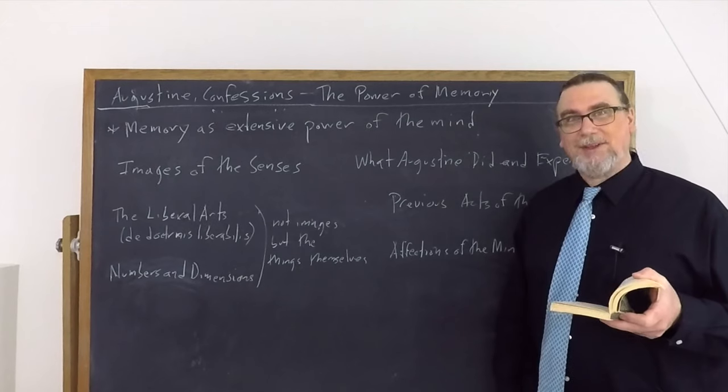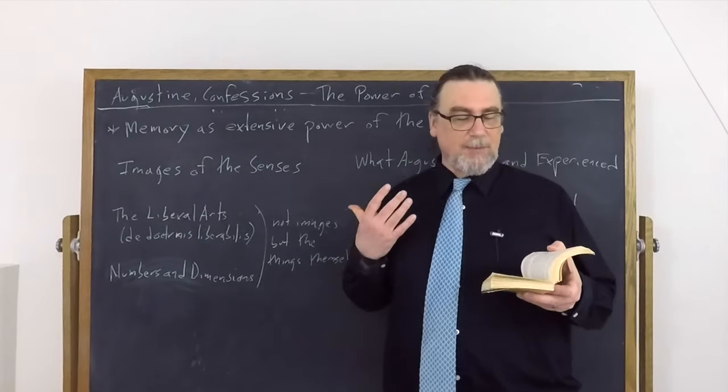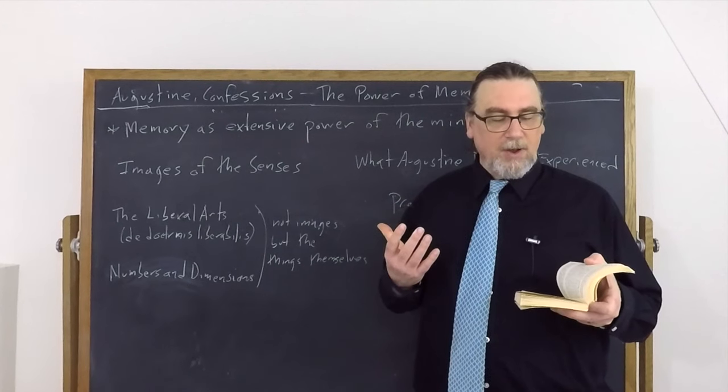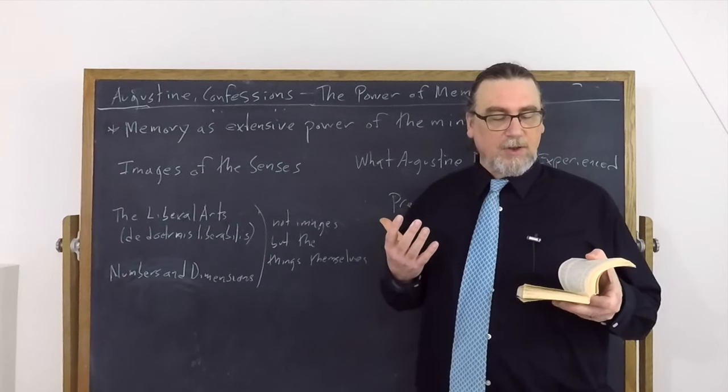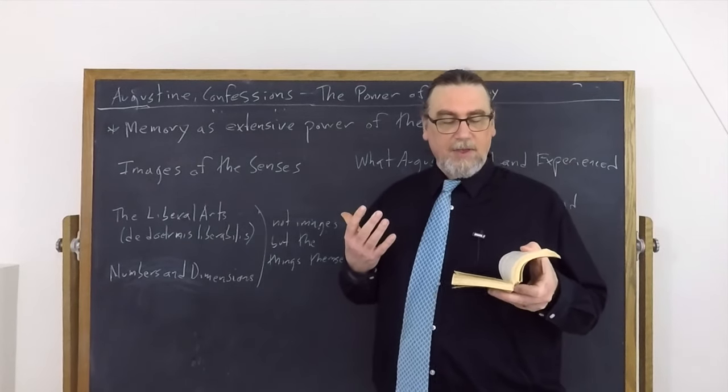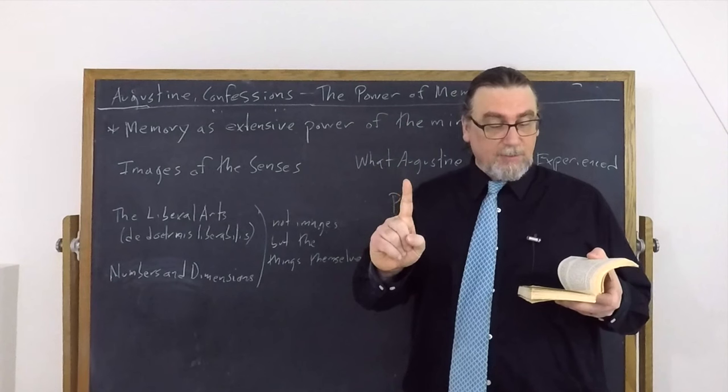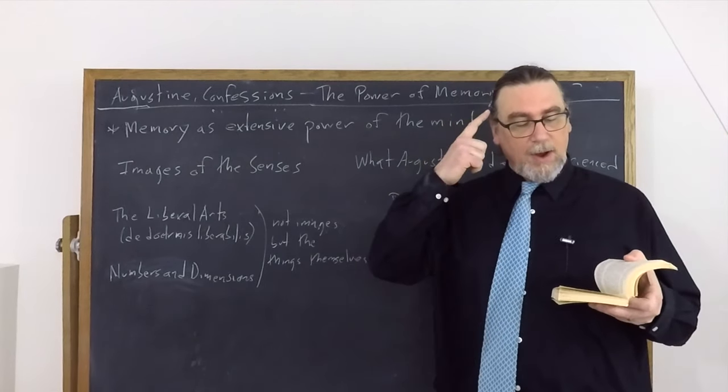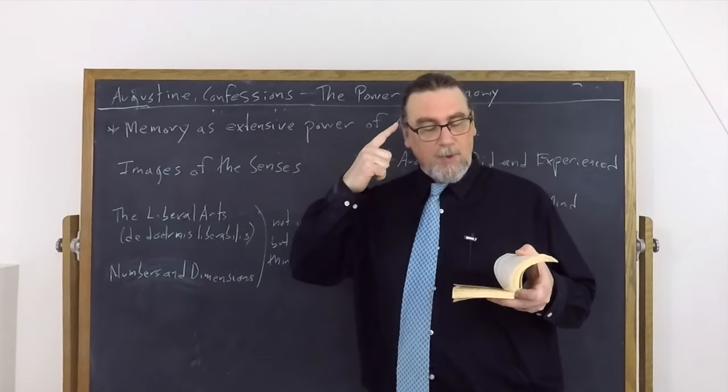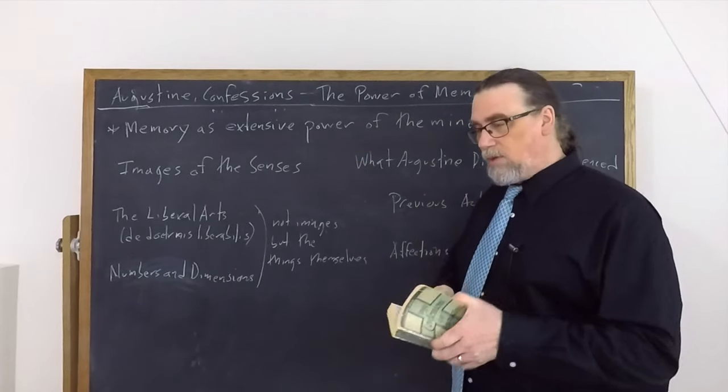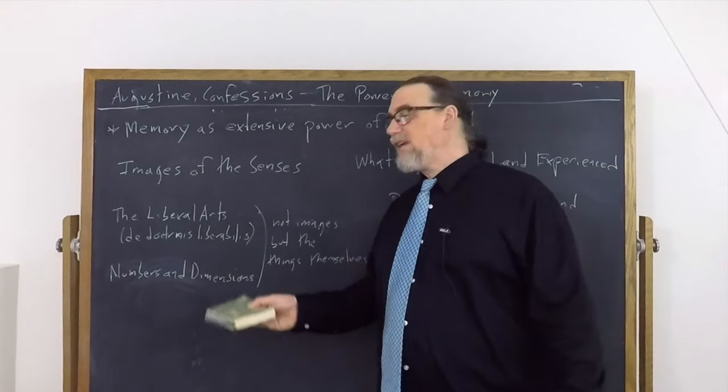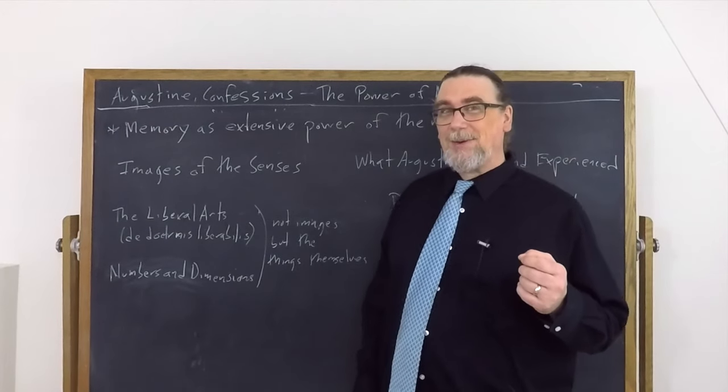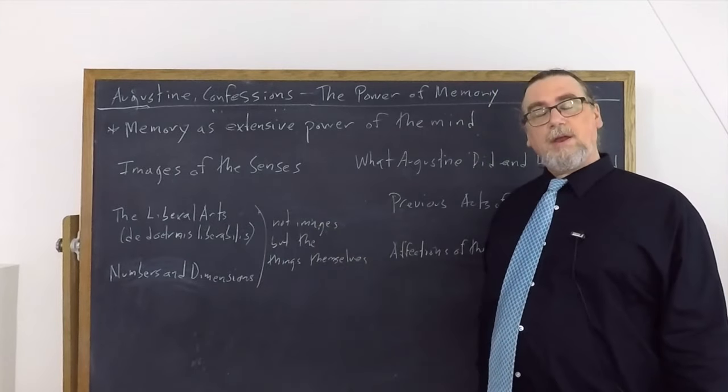So this is something quite important, isn't it? And he goes on and he says in chapter 10, when I hear that there are three kinds of questions: Does a certain thing exist? What is it? What are its properties? I retain the images of the sounds out of which these words have been fashioned. I know they passed with ordered sound through the air that they no longer exist, but as to the things themselves, which are signified by those sounds, I didn't attain to them by a bodily sense, nor did I describe them anywhere in my mind. Yet I stored them away in my memory as those things themselves. So the questions, the principles, all of these things that go into the types of knowledge that we have, at least most kinds of knowledge, because we're going to get to another important kind of knowledge in just a moment, they're stored in our memory.